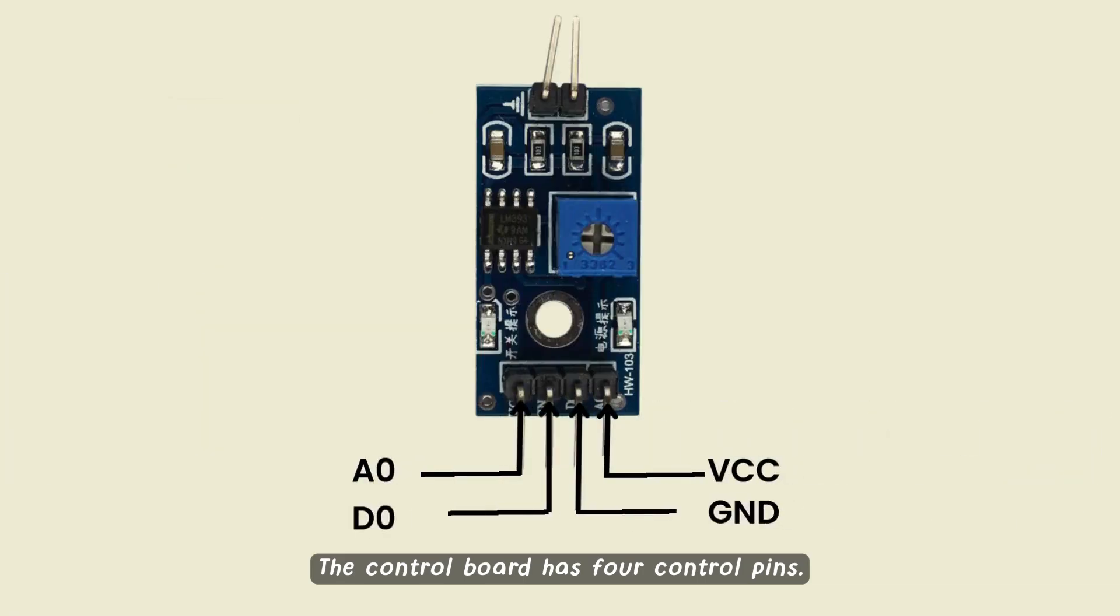The control board has four control pins. AO, analog output, DO, digital output, GND ground, and VCC, voltage common collector.